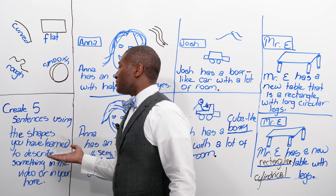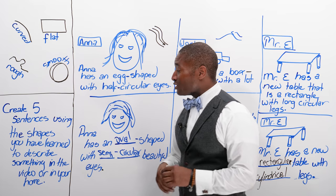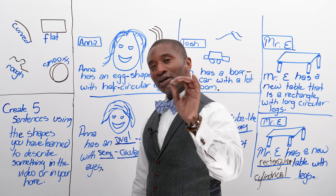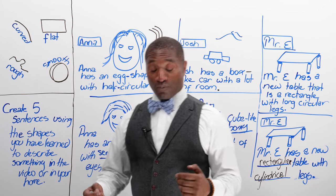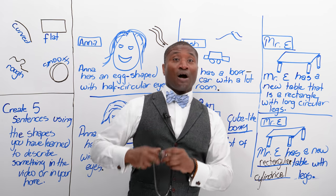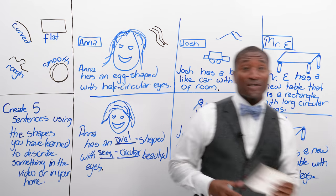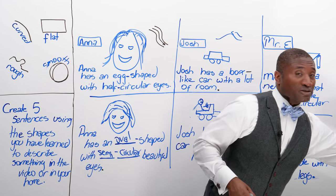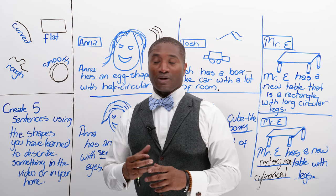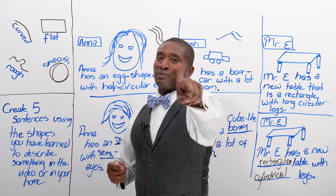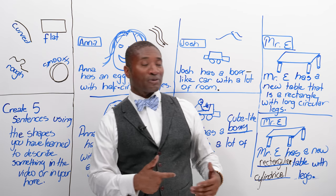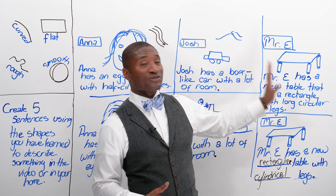I want you to create five sentences using the shapes you've learned to describe something. Here's the homework: in this video I am wearing things, like my watch, my pocket watch. Try and use a sentence — like 'he took out the oblong book from his pocket' or 'the cylindrical water bottle was...' Make a sentence about something you saw in the video to describe it. You know: 'he wrote on the flat, smooth surface of the board.'